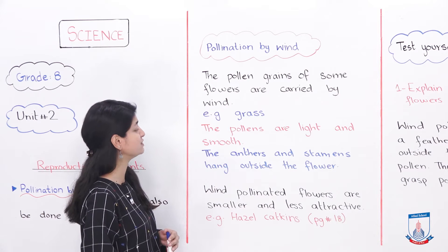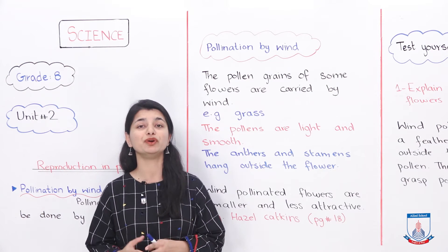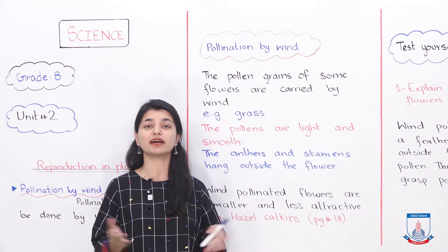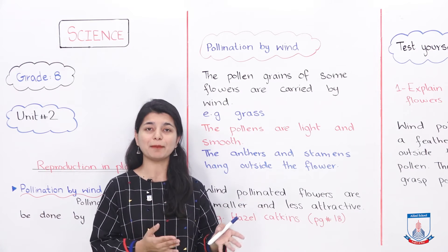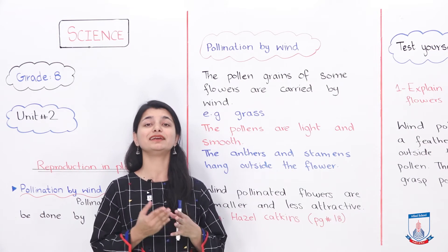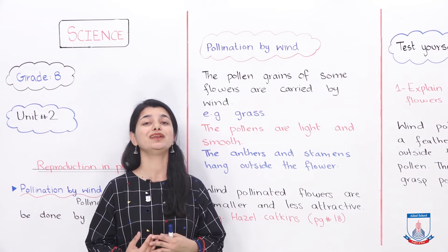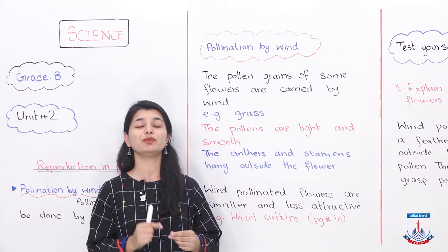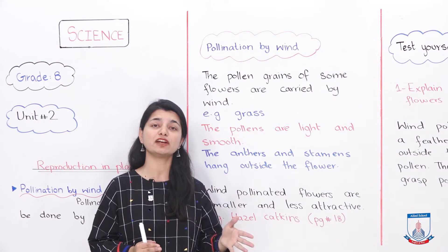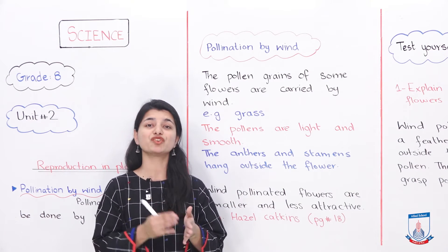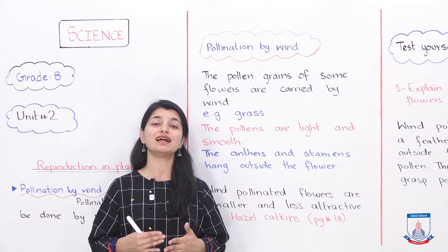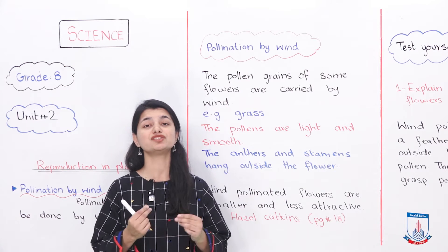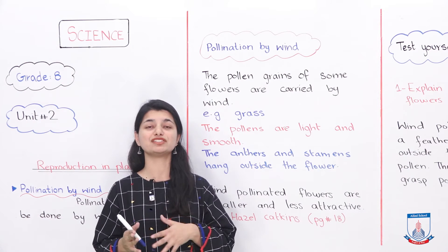The pollens of wind pollinated plants are light and smooth. Obviously, because these pollens have to be carried in the air, they must be very light so the air can transport them. The plant is designed to pollinate through wind. For insect pollinated plants, the pollens were very sticky so they would easily stick to the body of the insect and then to the stigma. But wind pollinated plants have very light, smooth, and soft pollen grains.